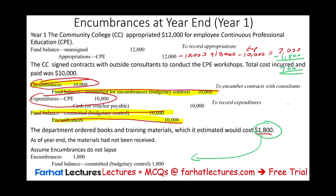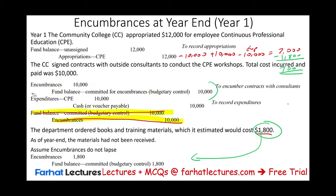We encumbered $1,800, just like when we encumbered $10,000 for the consultant. Now we are buying material. By year end, these goods — the books and training material — we did not receive. Since we assume the encumbrances do not lapse, they carry forward to next year. When we receive them next year, we will accept the charge from year one.